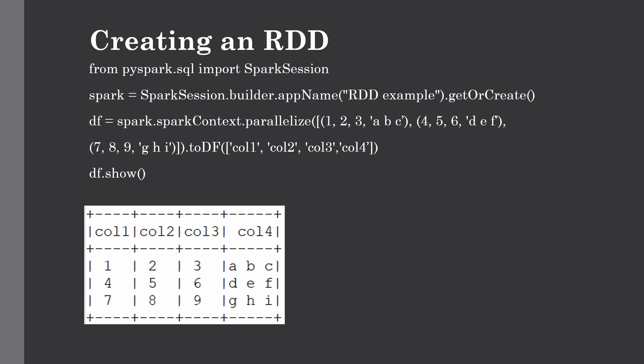On the next line, we are creating an RDD using the parallelize method. You can pass a list, tuple, dictionary, or array — it is totally up to you and the type of data you are handling. Here we have passed a list, and toDF is used for applying the schema, in this case assigning column names. There are four columns in our RDD, and the three items in our list will act as separate row items. Here you can see the result for our RDD — four columns and three rows which are the components of our list.